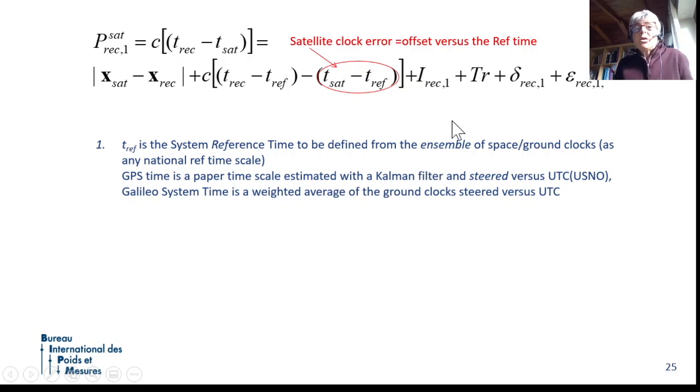Imagine if we have many clocks, the reference time is a sort of ensemble time, a sort of average of our clocks. This is what happens. GPS, for example, has a reference time, which is called GPS time, obtained by the average of all the clocks with a Kalman filter. The European Galileo system is using as well the clocks of the ground segment and defined Galileo system time with a weighted average of the clocks, and they are both steered versus UTC.